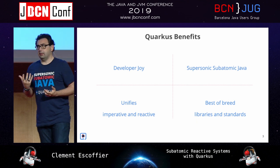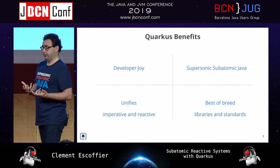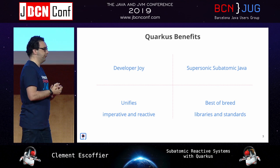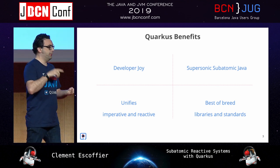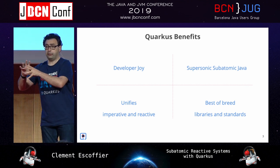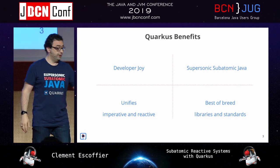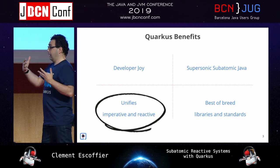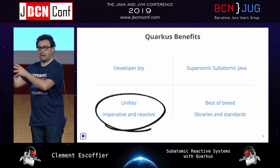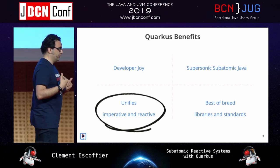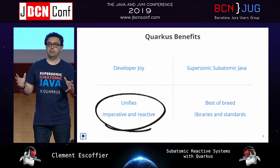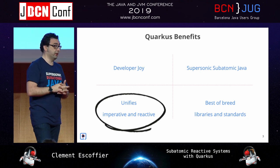Quarkus is based on things you already use — Hibernate, Bean Validation, Camel, Vert.x, and so on — so you can already claim five years of experience with Quarkus. What's new is how we initialize it by pushing most of the work to build time. In Quarkus, we also wanted to address the internal war between reactive and imperative. I come from the Vert.x team, which is a toolkit to build reactive applications, and I've heard that debate for years. Here in Quarkus we try to make them work together.